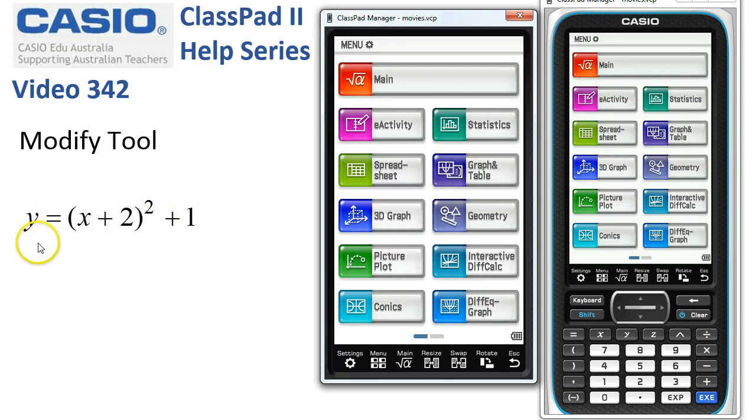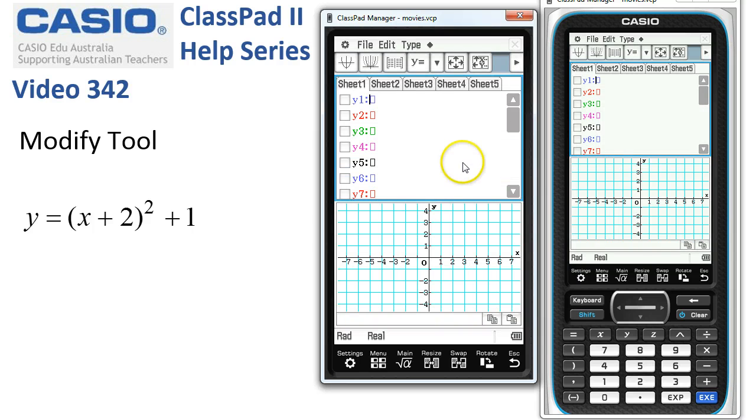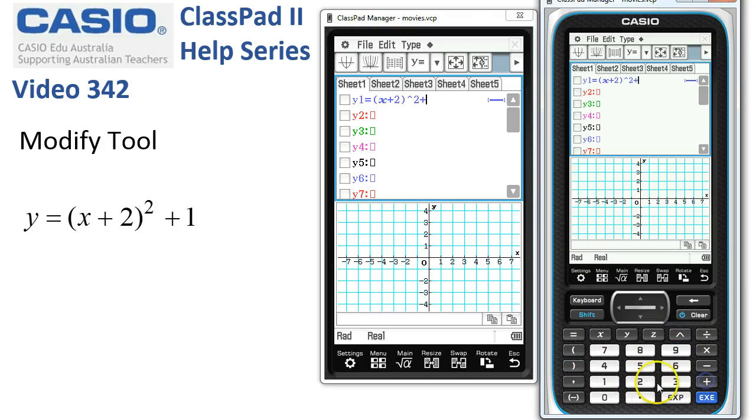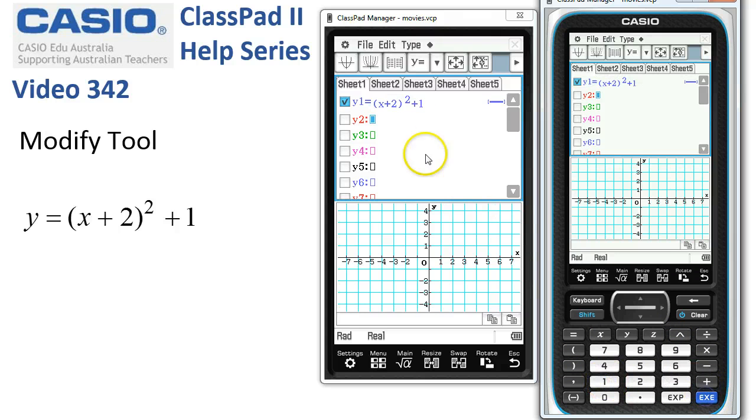Using the modify tool to explore functions. We'll start off in graph and table and enter the function. We need x plus 2 squared plus 1 and tap execute to select it and draw it in.